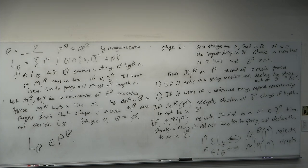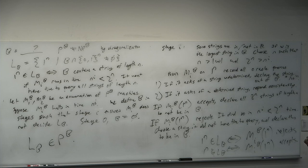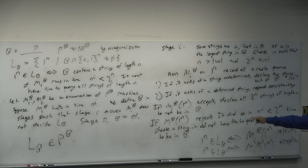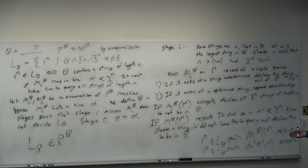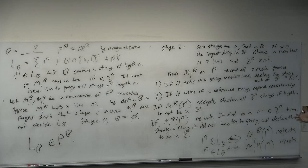Either way, L_B is not decided by any polynomial-time oracle machine, so L_B ∉ P^B. QED — we diagonalized against the oracle machines and made sure each one was incorrect. If the machine rejects, we choose a string it didn't have time to query and put it in the oracle to make 1^N ∈ L_B — making the machine incorrect since it rejected. If the machine accepted, we ensure all strings of length N are not in B, so 1^N ∉ L_B — again making it incorrect.